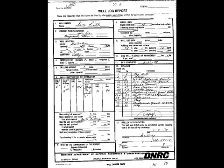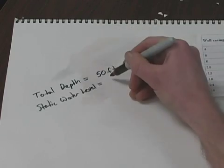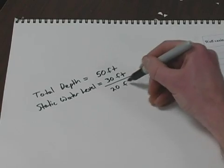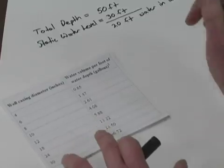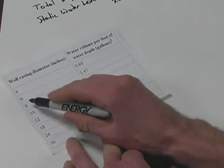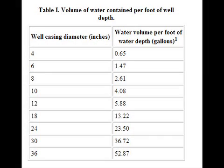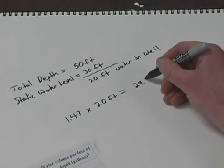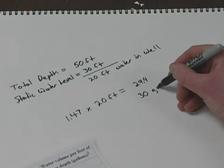Looking at my well log, I can tell this well is 50 feet deep and it is 30 feet to groundwater. This means I have 20 feet of water in the well. Now we look at the following table to figure out how many gallons of water there are for each foot of water in the well. The casing diameter is 6 inches, so there are 1.47 gallons per foot of water in the well. 1.47 times 20 feet of water equals 29.4 gallons, which I will round to 30.